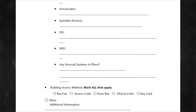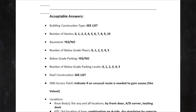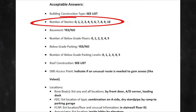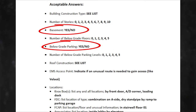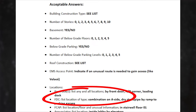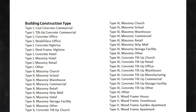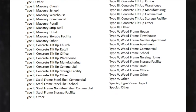When providing this information, there's specific verbiage you need to use to be compatible with the CAD system. Scroll down to the bottom and you'll see an area that says acceptable answers — it's important that you answer these questions along those guidelines. For example, for a three-story building, write the number 3, not the word three. Building construction and roof construction get more specific, requiring predetermined terminology shown on the list.